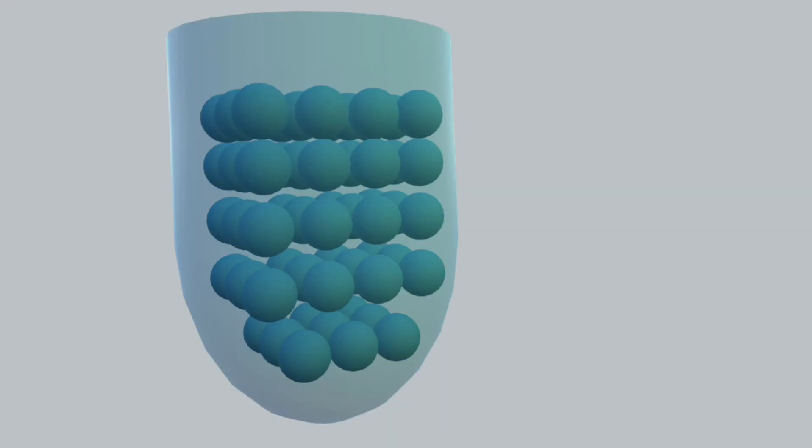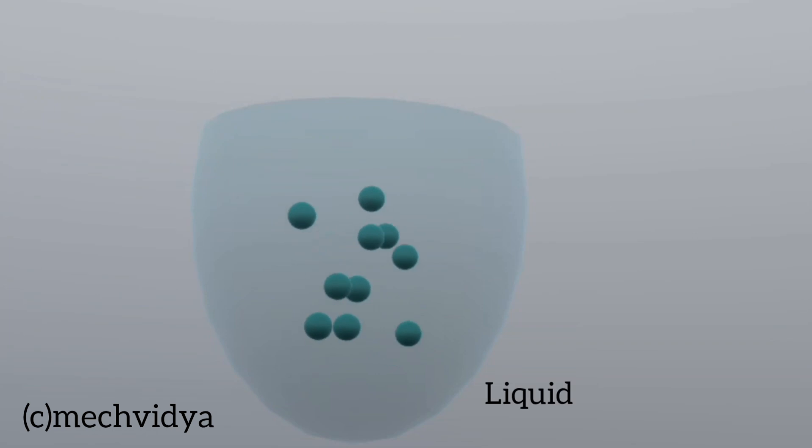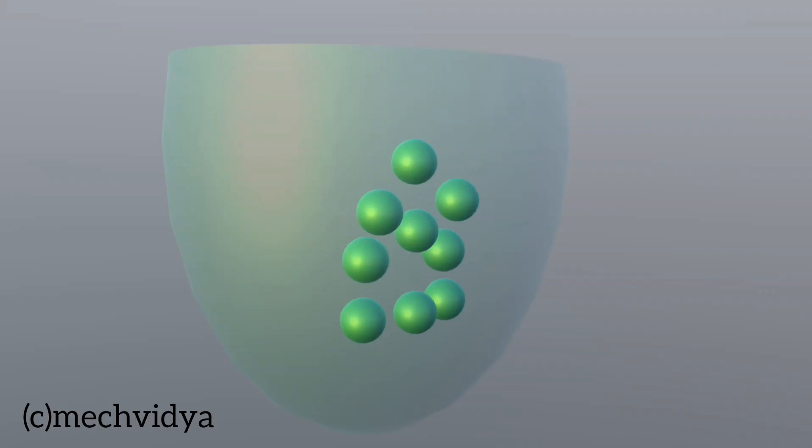In solids, the atoms are placed orderly and they vibrate about their fixed positions. On heating, the kinetic energy of molecules increases and the bonds become weak. Further addition of energy breaks the bond and the molecules move randomly at high kinetic energy in gas.